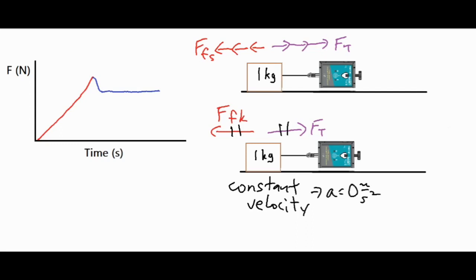The force of static friction has a maximum threshold at which it can push back on an object, based on the roughness of the surface and the normal force between the object and the surface. Static friction can push back more than kinetic friction — for example, static friction might push back with 8 newtons while kinetic friction can only push back with 5 newtons.